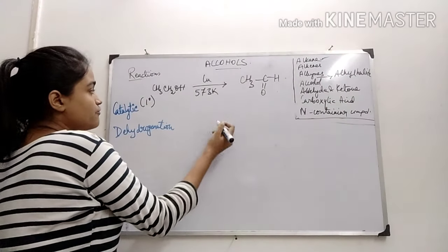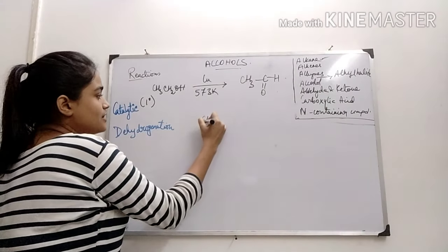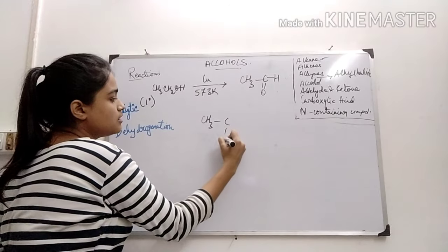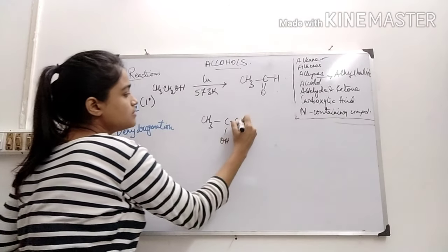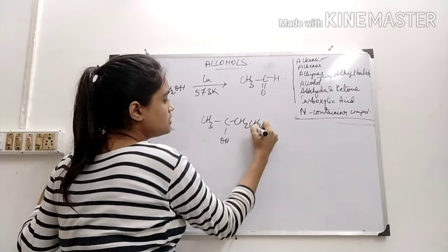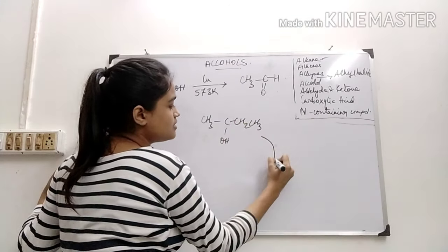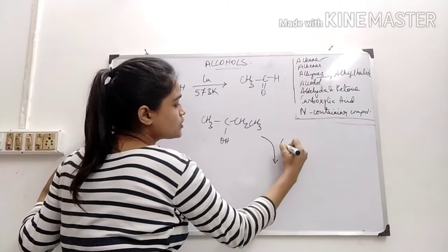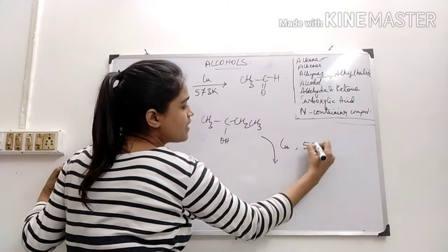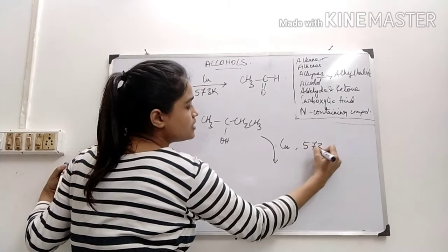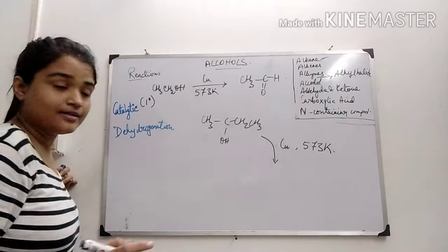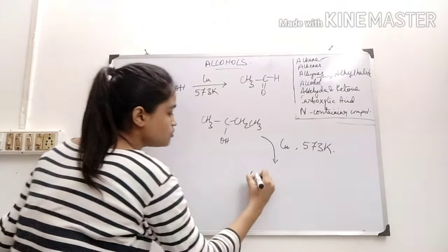And for a secondary alcohol, if I treat this with copper at a temperature of 573 Kelvin, we will get ketones.